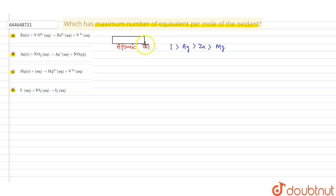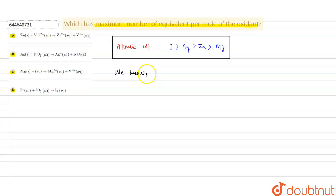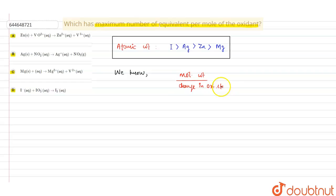We know the formula: equivalent weight = molecular weight divided by change in oxidation state. So if molecular weight is more, the equivalent weight is also more, meaning equivalents per mole is greater. We can use this to eliminate two or three options.